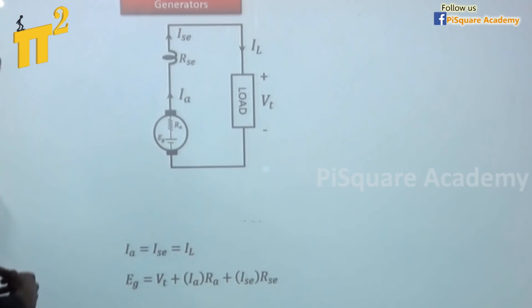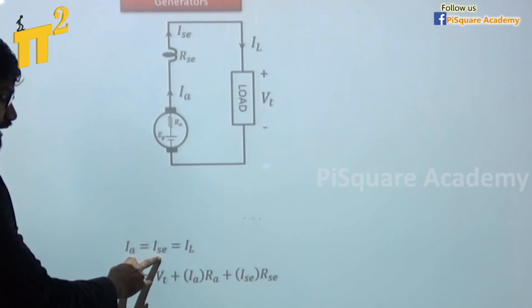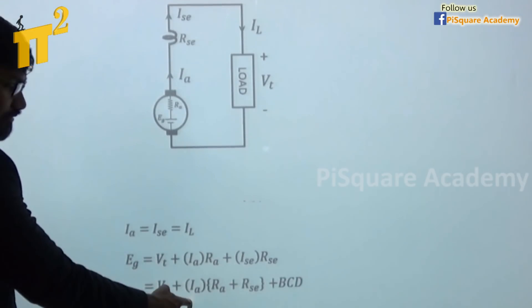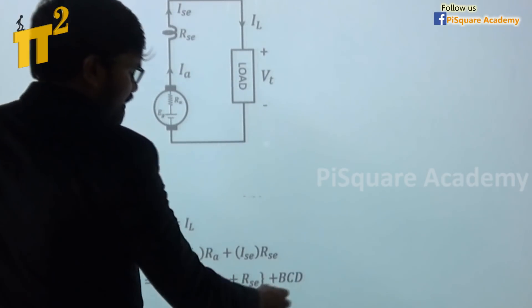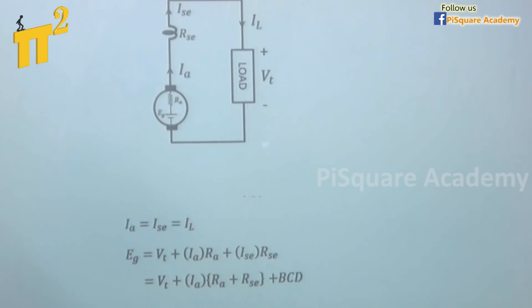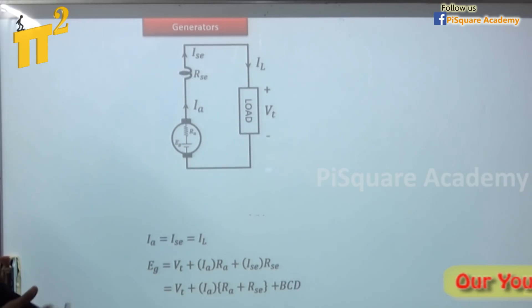Rsc is series field resistance. So we know Ia is equal to Isc. I can simplify this equation as this one and I am adding here brush contact drop also. They are the simple equations for a DC series generator.